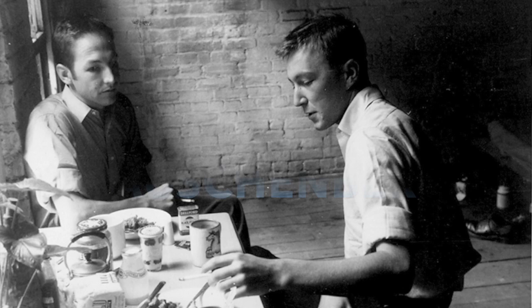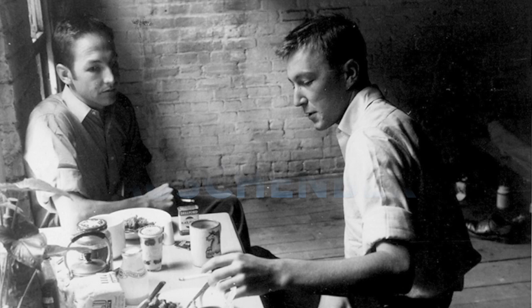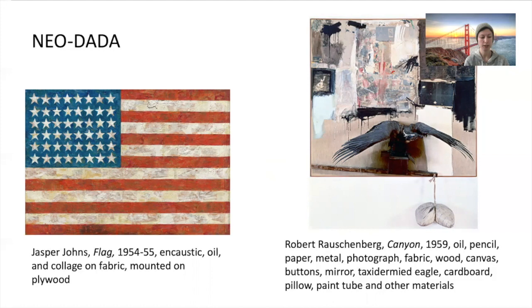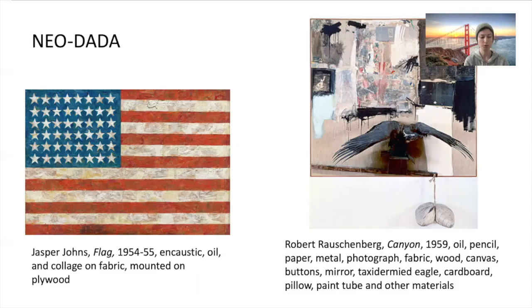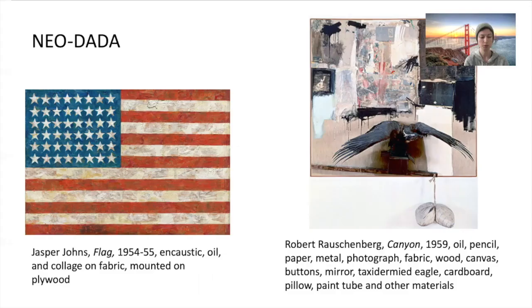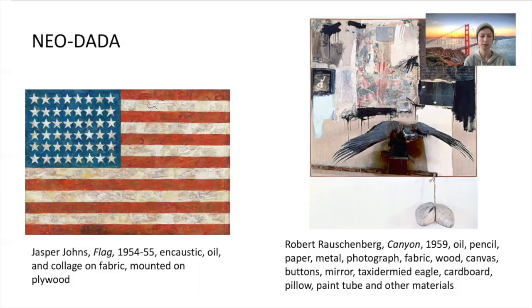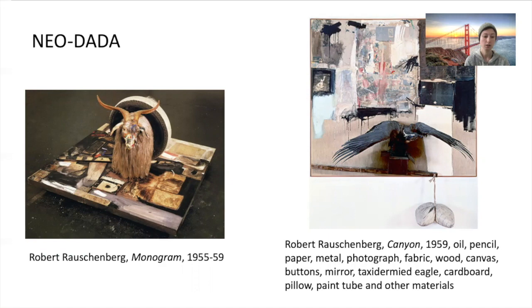The artists Jasper Johns and Robert Rauschenberg combined everyday objects and images. Johns depicted things the mind already knows, such as American flags, targets, numerals, and even beer cans. Rauschenberg also blurred the boundaries between painting and sculpture with his work, which he called 'combines,' since they combined different materials like taxidermied animals, painting, and found objects. Like Duchamp, these works are open to different interpretations, irreverent and humorous, even silly.